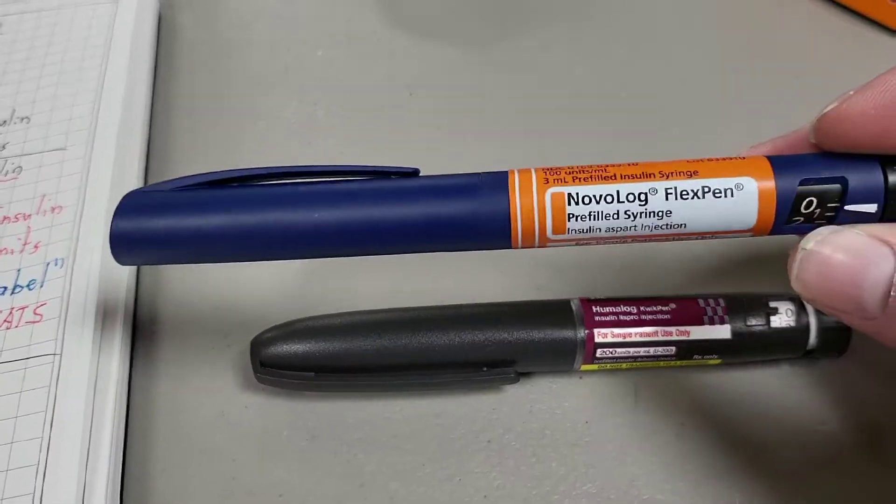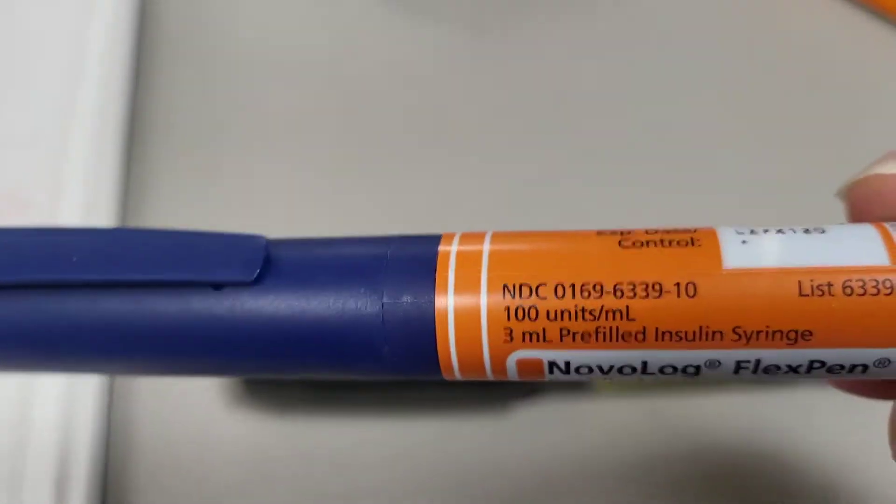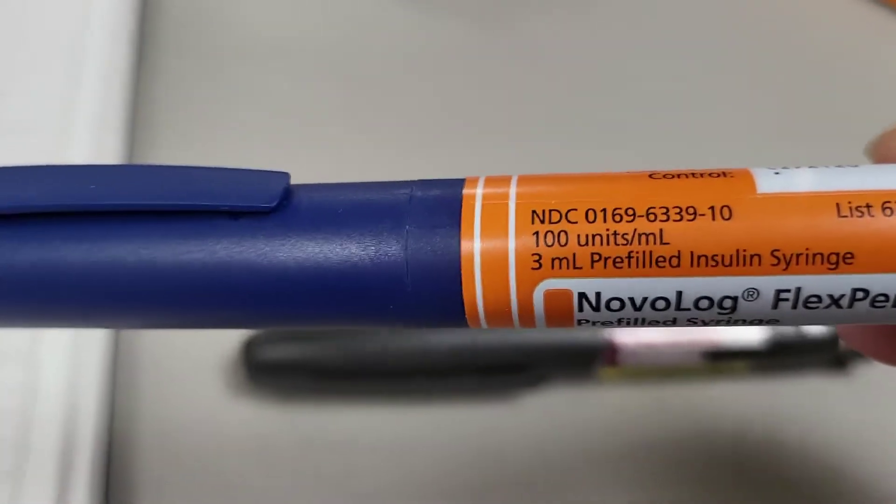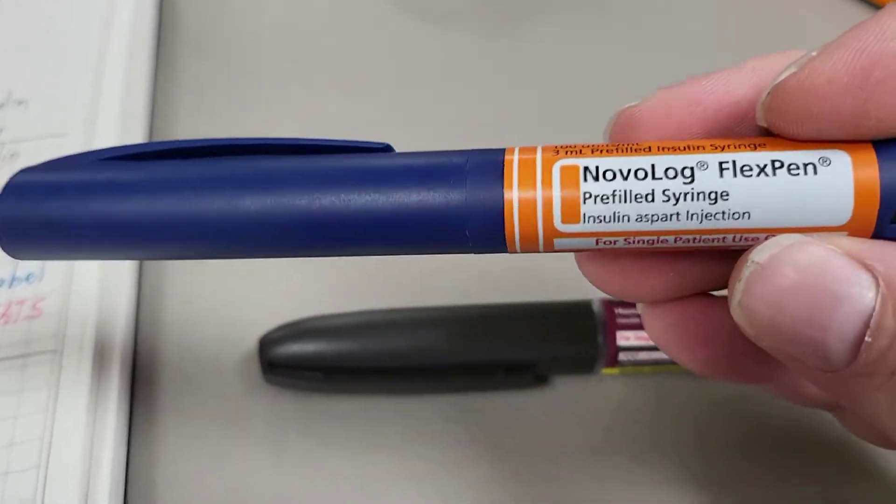This here is NovaLog, contains three milliliters of insulin, and there are 100 units in each of those milliliters, meaning each pen contains about 300 units.